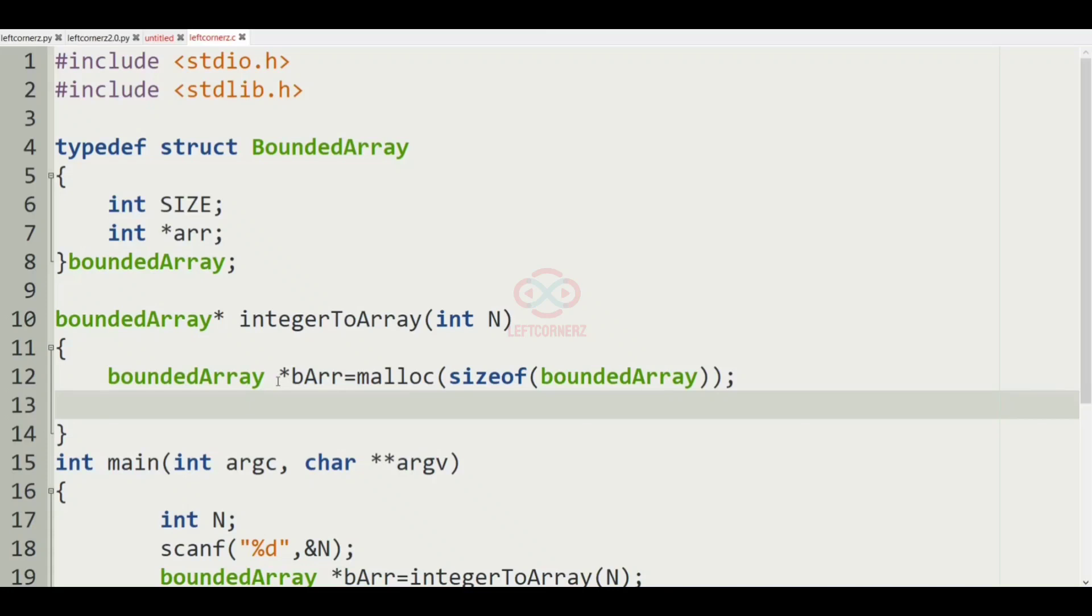After this we'll have bArr->array equal to malloc of sizeof int times 101.